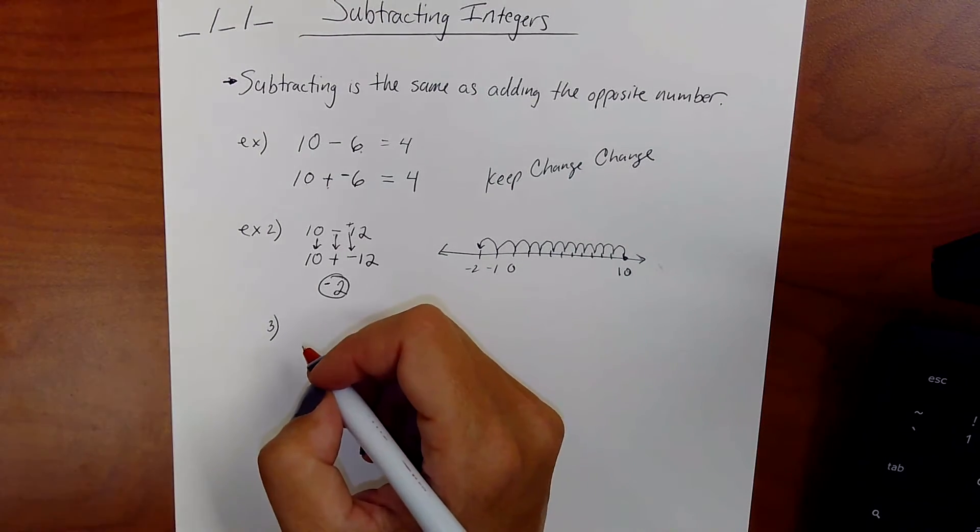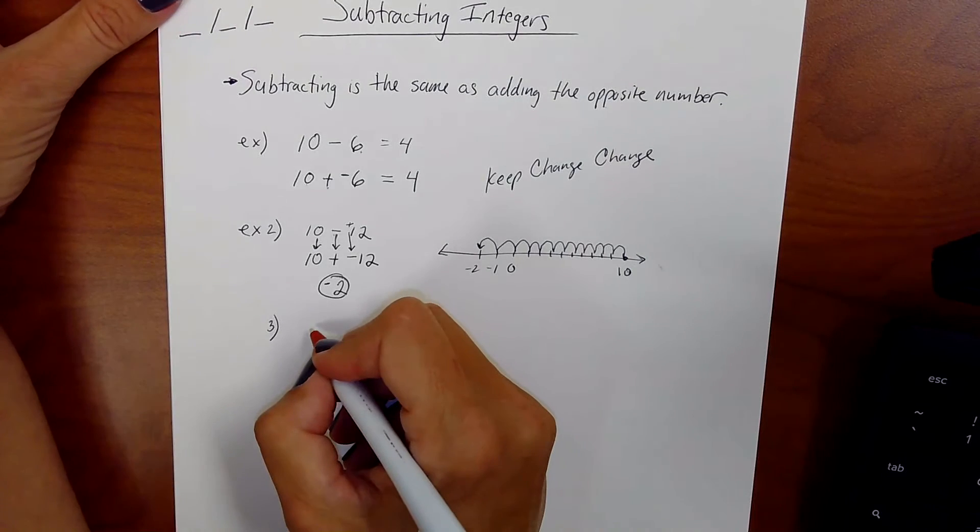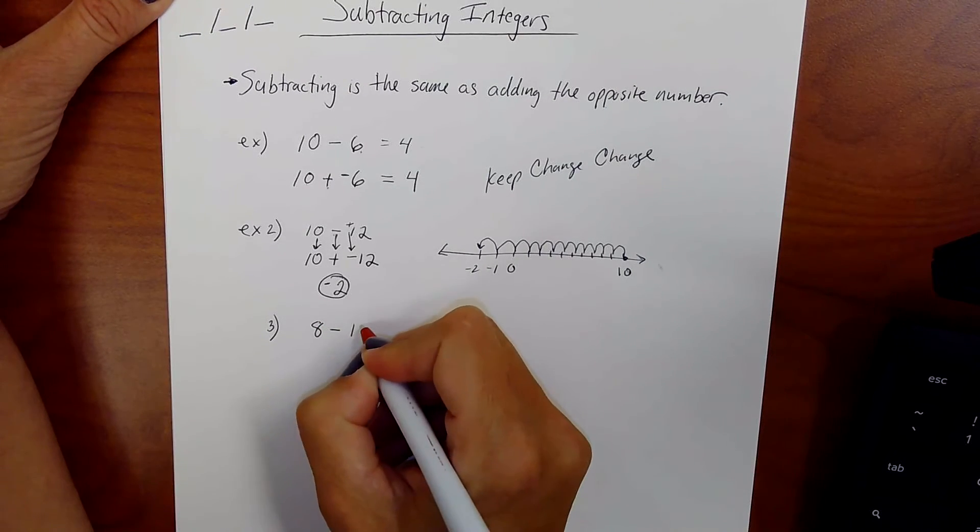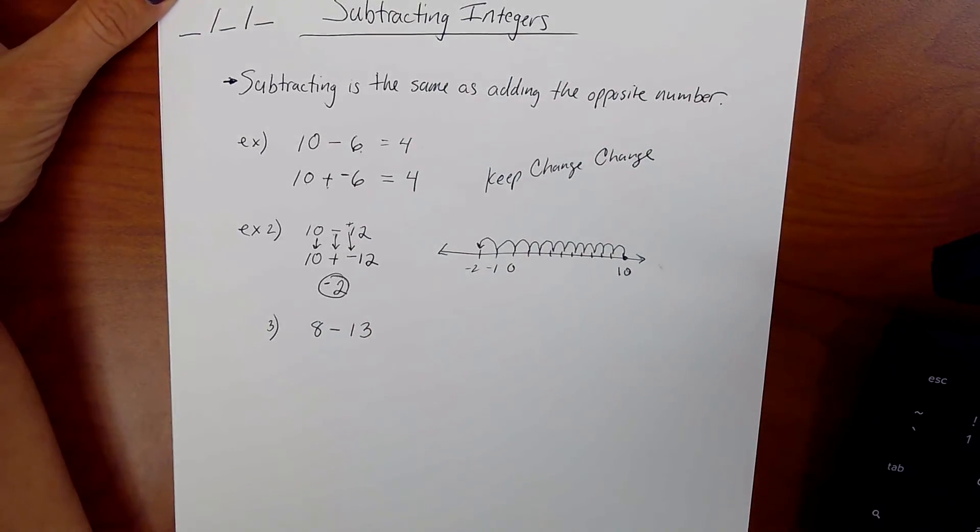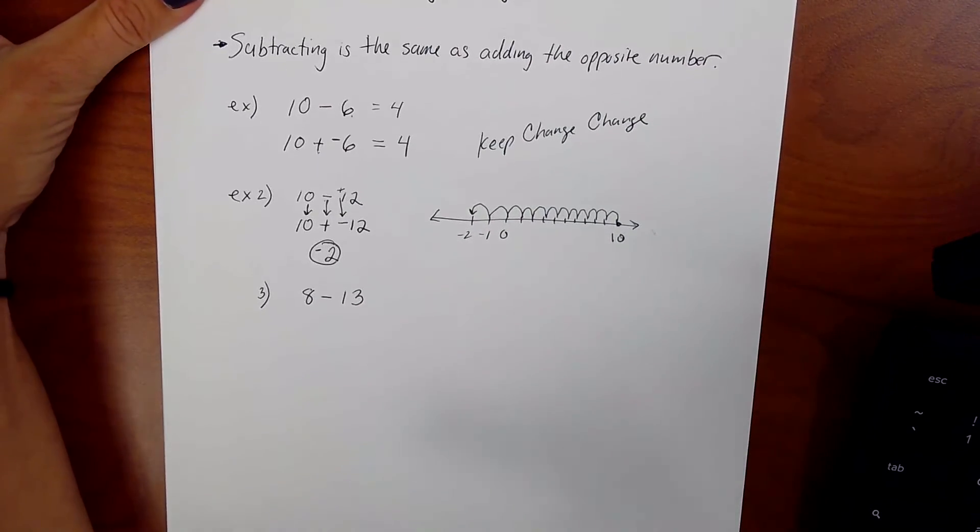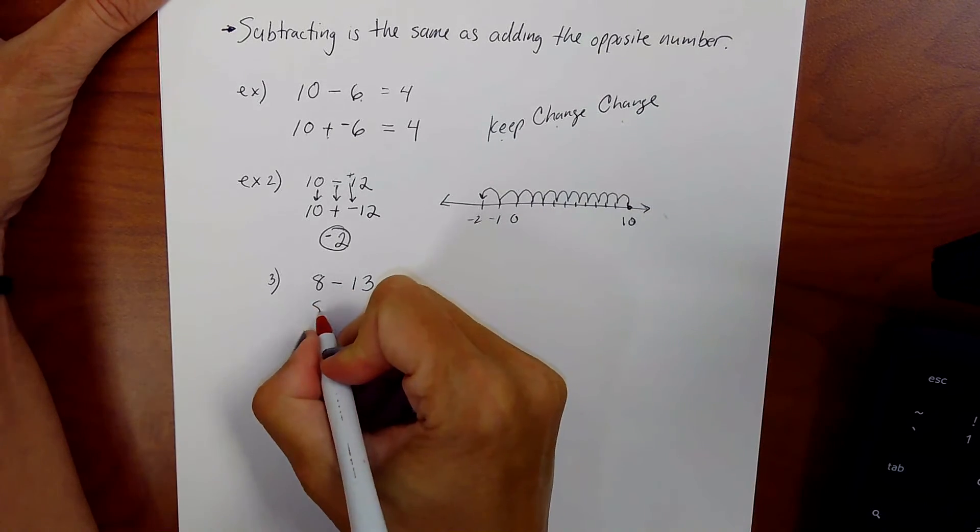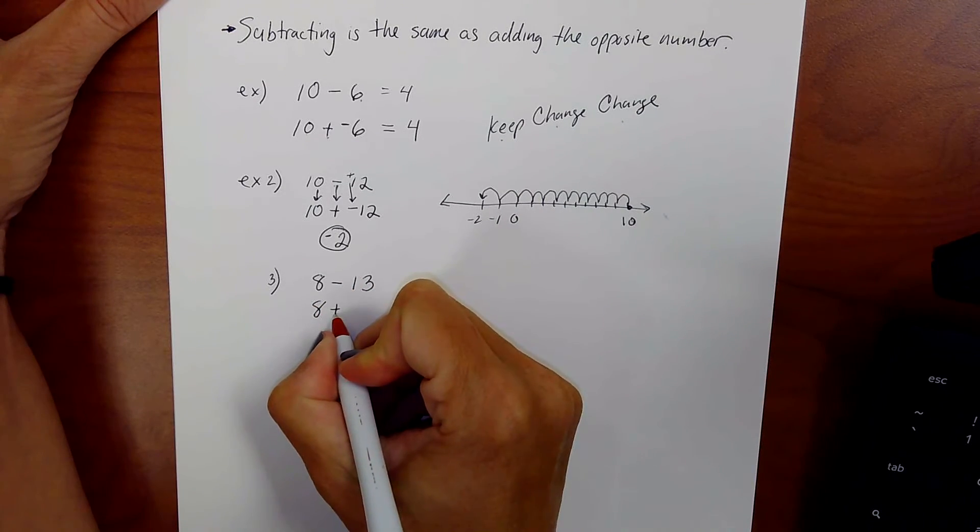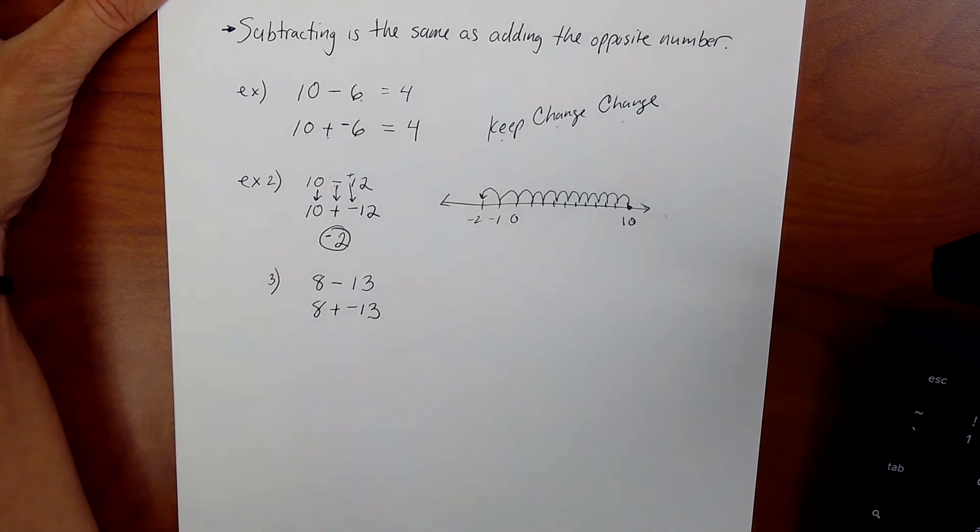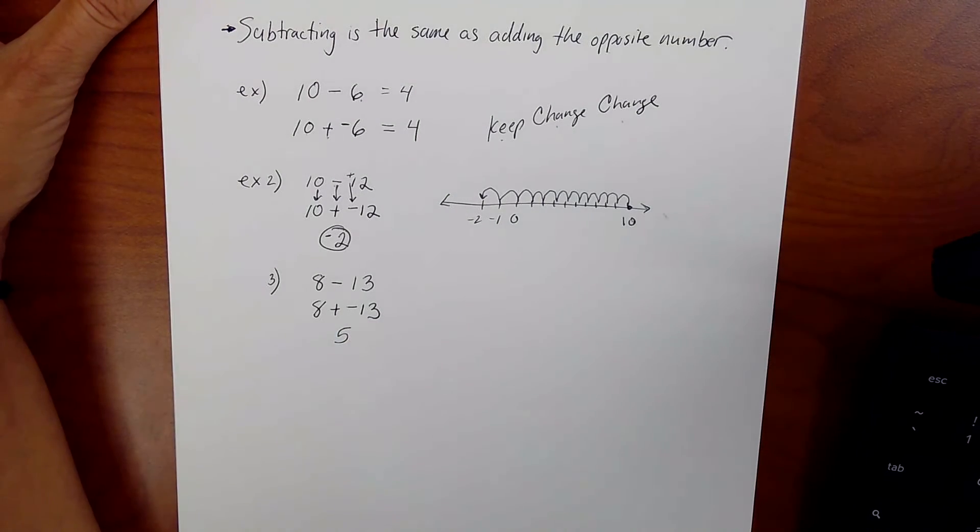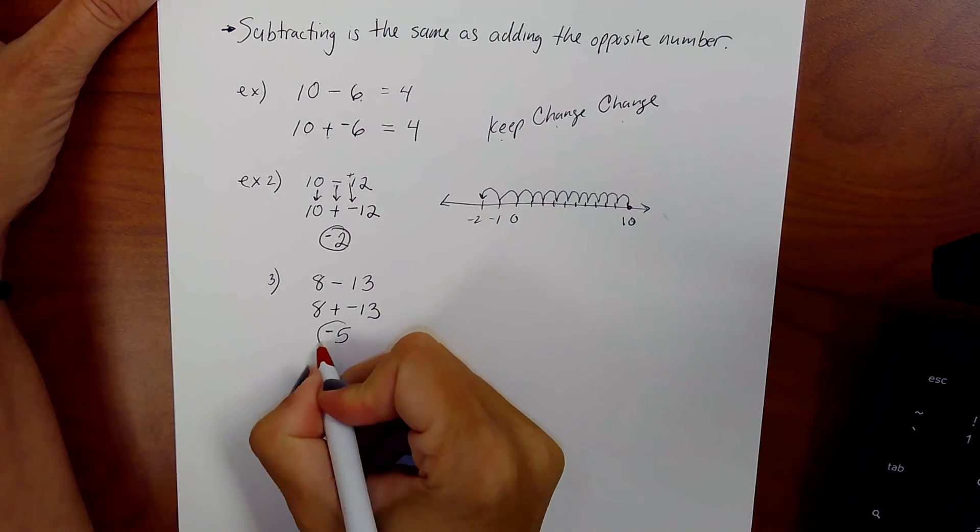So let's try another problem here. How about 8 minus 13? I see this subtraction. I'm just going to go ahead and do keep, change, change. That's now addition. And that's a negative 13. Are the signs the same? No, they're different. So I subtract, I'm getting a 5. And 13 is greater, so that's a negative 5.